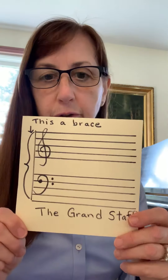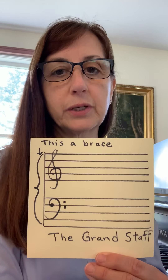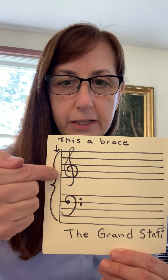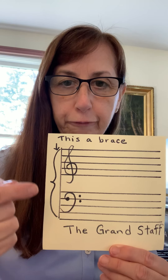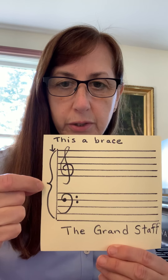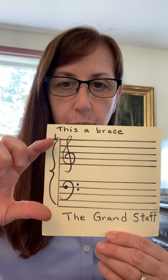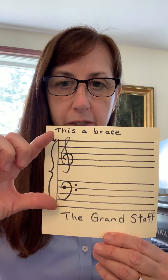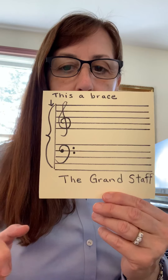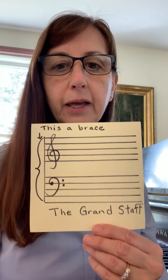So today we're going to look at the grand staff, and this is what piano music is written on. You know this is a grand staff because you see this little picture in the front called a brace — it looks like a little nose. And it joins the treble staff and the bass staff together. So when you're looking down at a piece of music, you see the first line of music, then the next one below, and that's your second line of music.